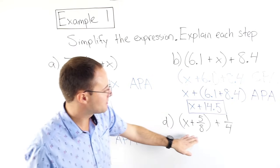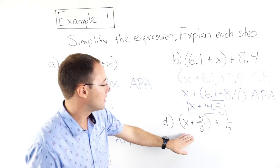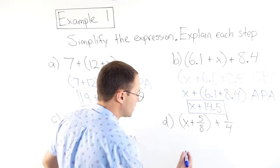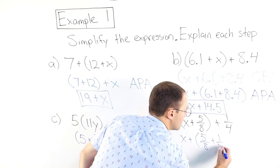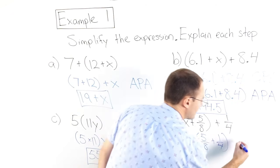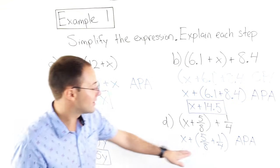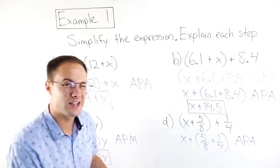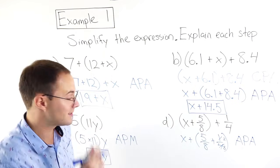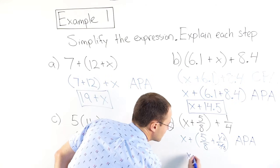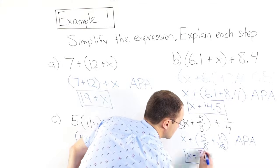Part D: x + (5/8) + 1/4. I want to change the grouping, and the order is fine as-is, so I'll go x + (5/8 + 1/4). That's the associative property of addition. Now, 5/8 + 1/4 — I need a common denominator, so 1/4 becomes 2/8. Five eighths plus 2 eighths is 7/8, giving a simplified expression of x + 7/8. Here are some to try on your own.